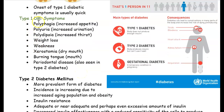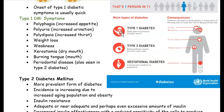Someone who has type 1 diabetes may be hungry all the time, go to the bathroom to pee frequently, get very thirsty, and have a dry mouth. Because of this, people with type 1 diabetes need to inject themselves with insulin so that insulin goes into the body and sends sugar to where it needs to go.